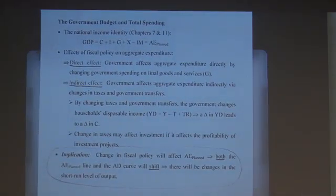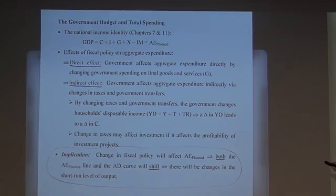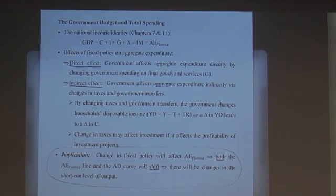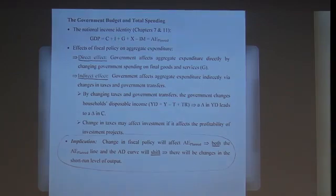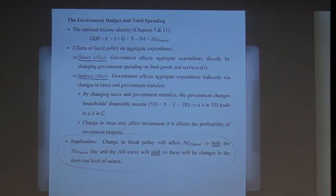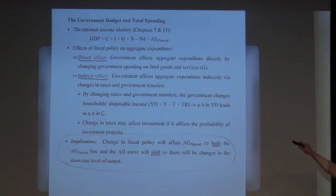Government spending on goods and services directly enters the total spending equation: GDP equals C plus investment plus G plus exports minus imports. That gives us our planned expenditure line. The government's fiscal policy — its choices over G, taxes T, and transfers TR — has an influence on our national income identity.